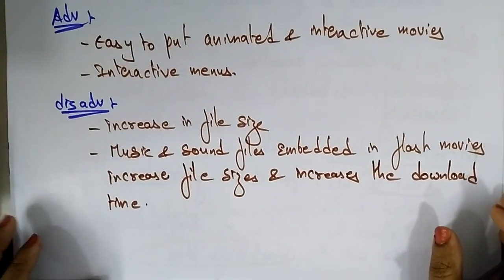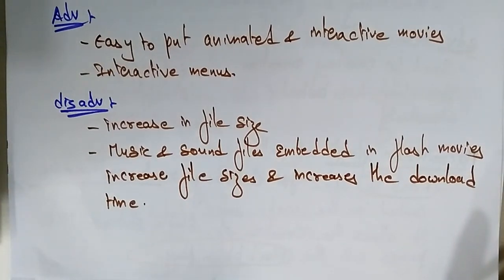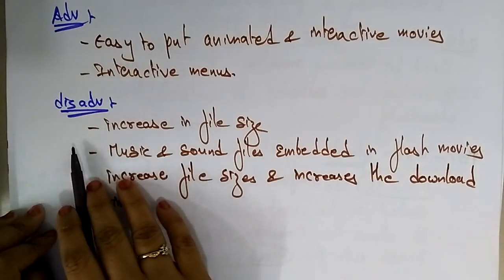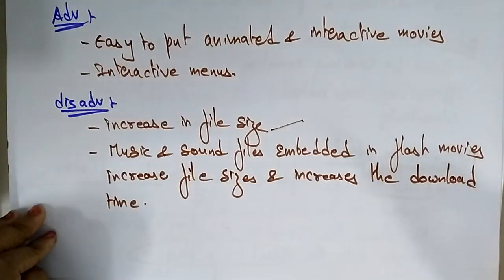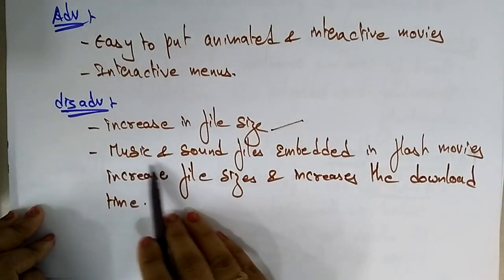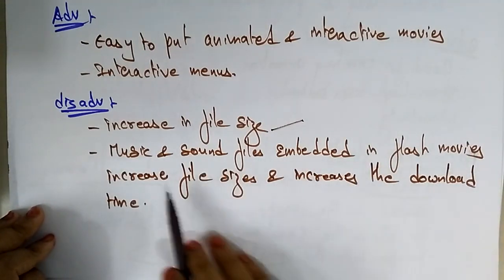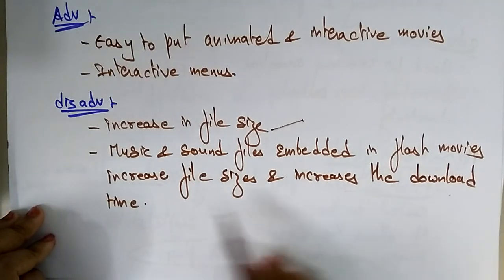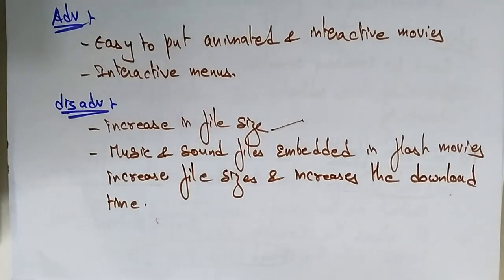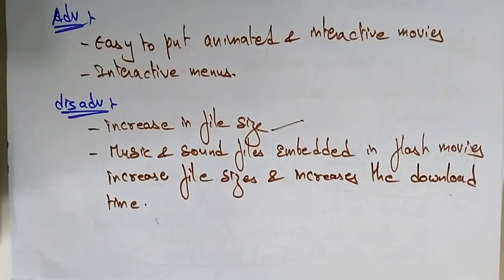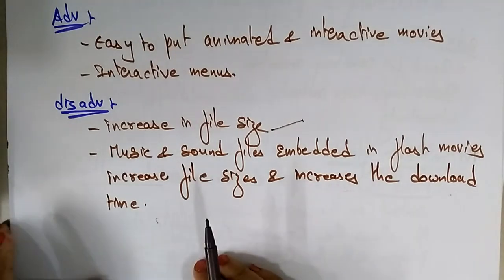The advantages of Flash are that it is easy to create animated and interactive movies and it provides interactive menus. The disadvantages are that it increases file size — music and sound files embedded in Flash movies increase file sizes, which also increases download time. If Flash content is present in a movie, images, or sound files, it takes a significant amount of time to download.